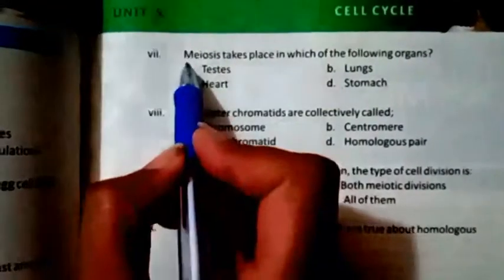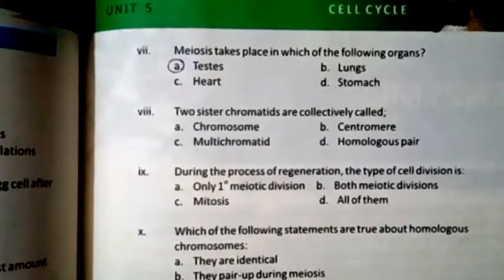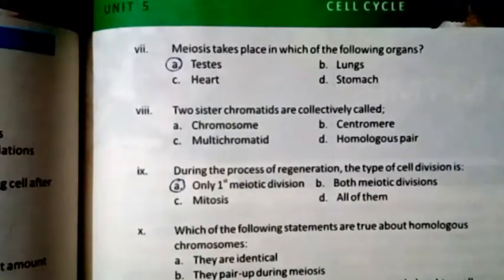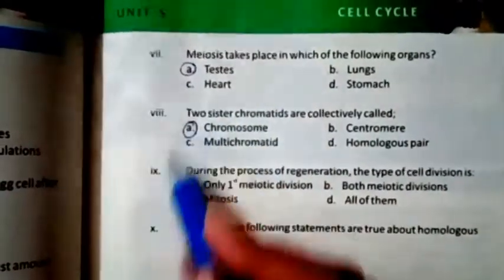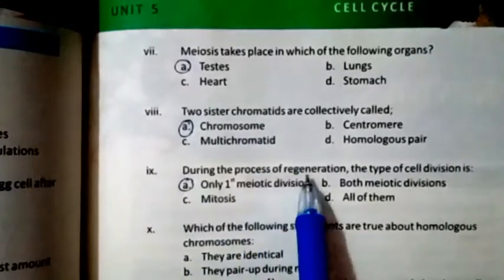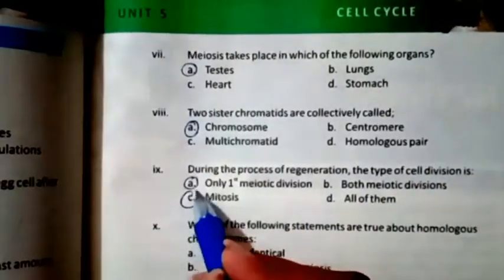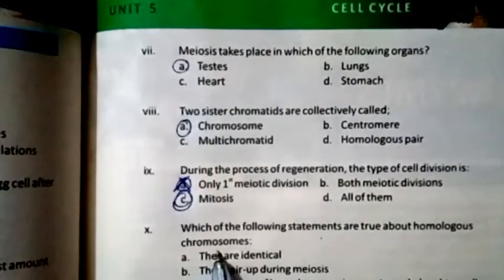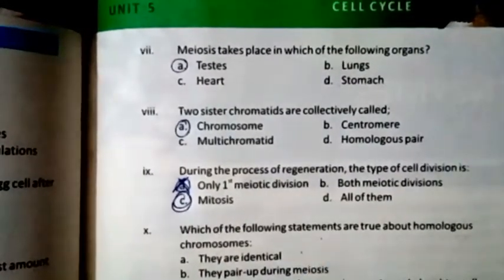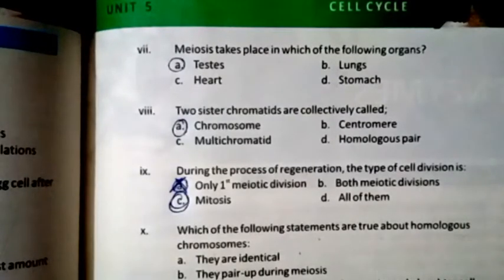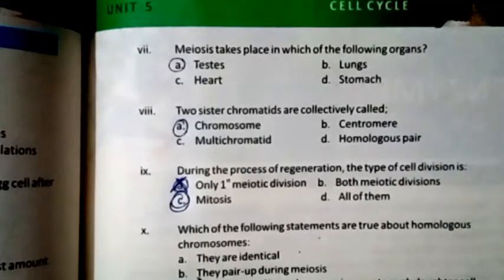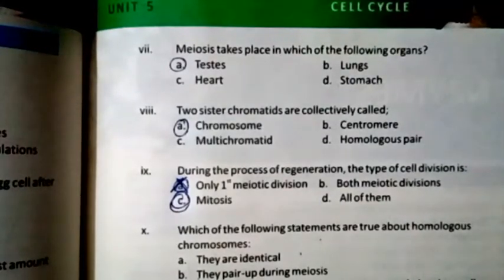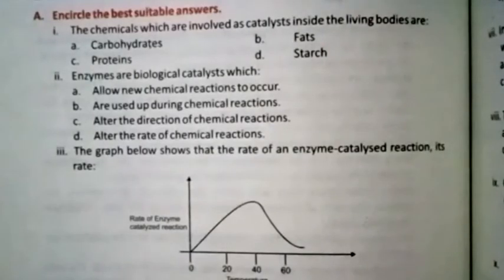Two sister chromatids are collectively called — the right option is a dyad, only in first meiotic division. During the process of generation, the type of cell division is mitosis. Which of the following statements are true about homologous chromosomes? The right option is D — all of them: they are identical, they pair up during meiosis one, and one partner of each homologous pair moves to each daughter cell.